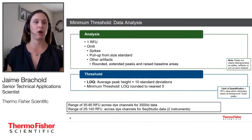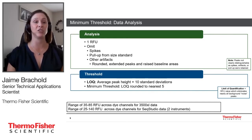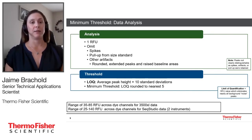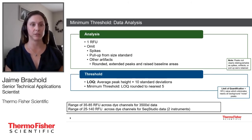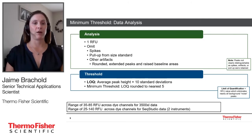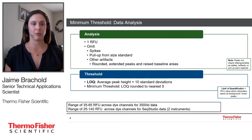We used minimum thresholds for analysis, calculated by analyzing non-template control data for each kit on each instrument at one RFU, editing out any pull-up, spikes, or artifacts from the size standard. We then calculated the limit of quantification — the average peak height of all non-artifactual peaks plus 10 standard deviations — and rounded to the nearest five to set the minimum threshold. On the 3500, thresholds ranged from 35 to 85 RFU across the dye channels across five chemistries. On the SEEK Studio across two instruments and all chemistries, the range was 25 to 140 RFU.